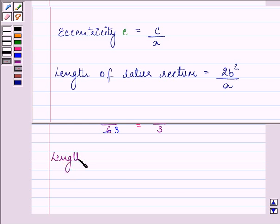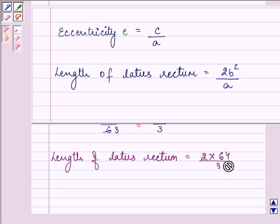And lastly, the length of latus rectum is equal to 2b²/a, which is 2 × 64/6, that on simplifying can be written as 64/3.